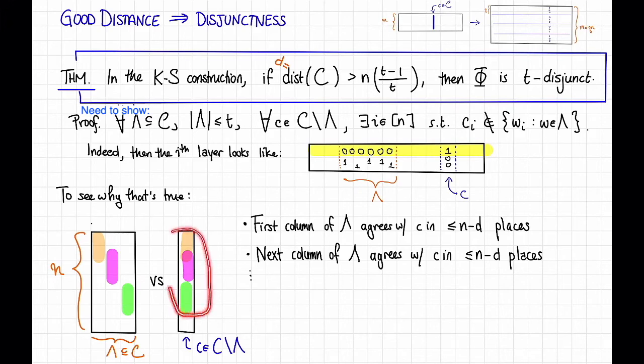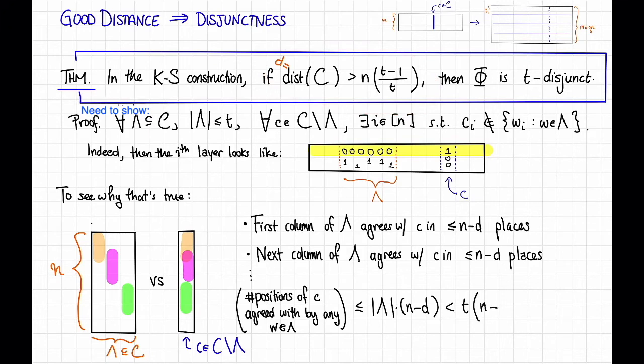Altogether, how many positions of this codeword c here are covered by one of the codewords in lambda? So the number of positions of c that are agreed with by any w in lambda is at most the size of lambda times n minus d, because each element of lambda can only agree in n minus d places. And using our assumption on d here, this is strictly less than t times n minus n times t minus 1 over t, which is also known as n. Therefore, there exists at least one position in this picture that is not agreed with by any of the codewords in lambda. And that's the i that we're looking for. So this is what we were trying to show. We're done.